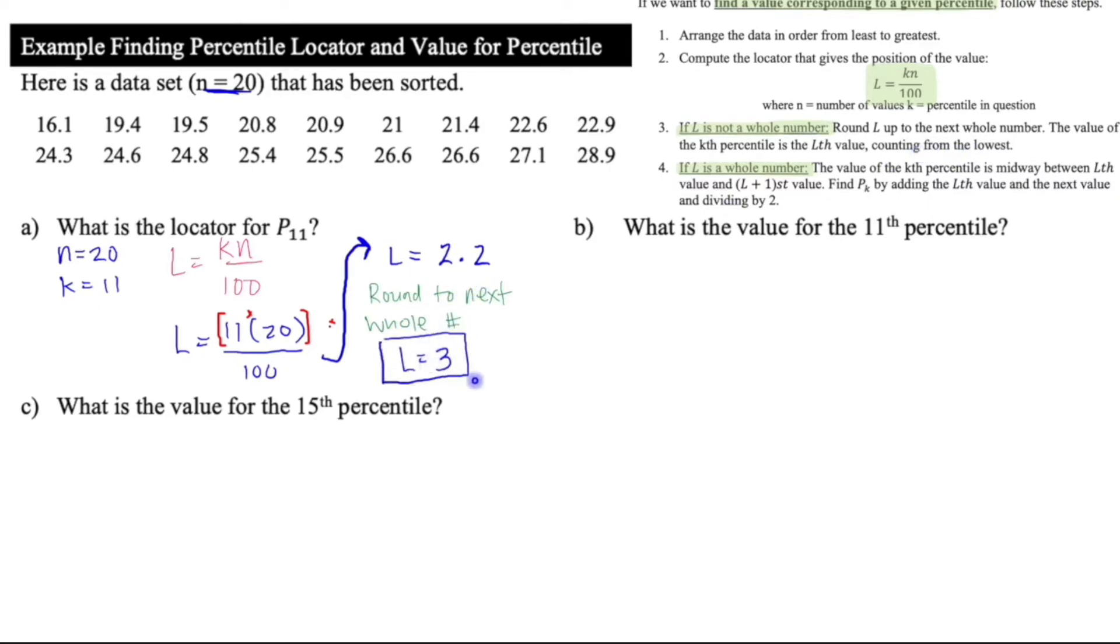So if L is 3, I round it up. Okay, I'm going to come to my, oh yeah, that's part b. So what is the value for the 11th percentile? It's going to be the third value from the lowest. So 1, 2, 3, there it is. And I simply write my answer as p sub 11, the 11th percentile is equal to 19.5.